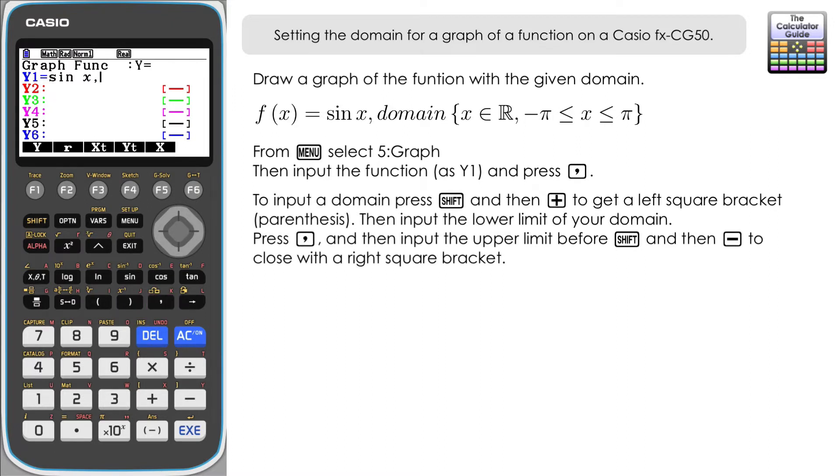and then we want to open up a set of square brackets, square parentheses. So that's shift and plus to open that up to get a left square bracket and then we want our lower limit for our domain which in this case is negative π and then comma and now we want to set the upper limit for our domain.